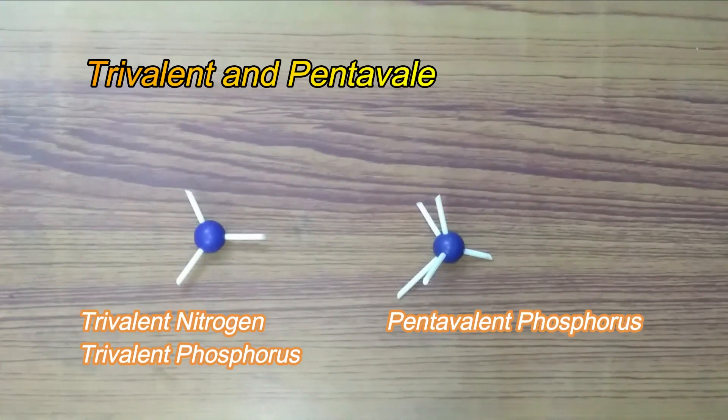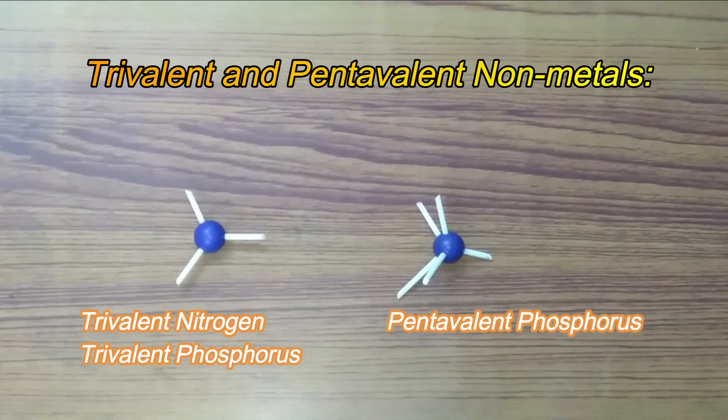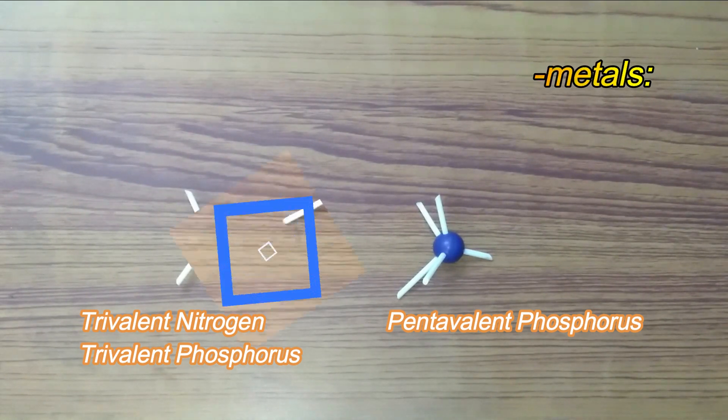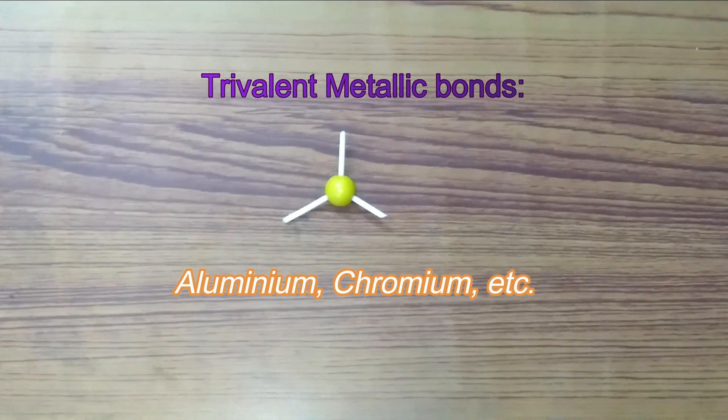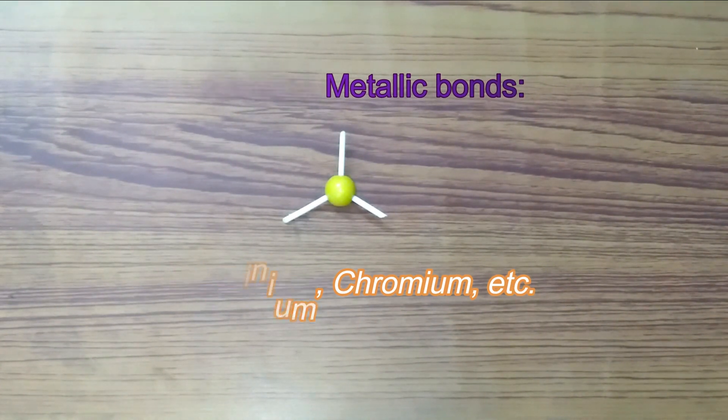The small blue ball represents trivalent and pentavalent non-metals for example phosphorus. The small yellow balls represent trivalent metals like aluminium, chromium, etc.